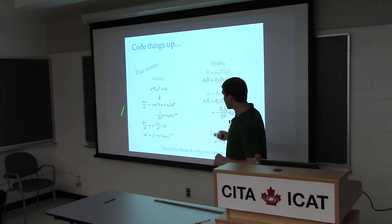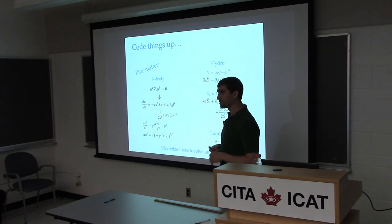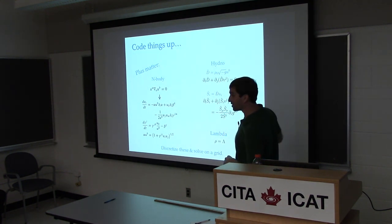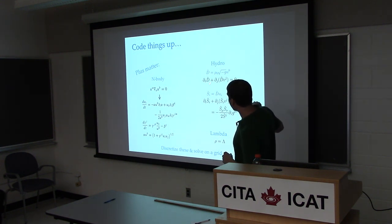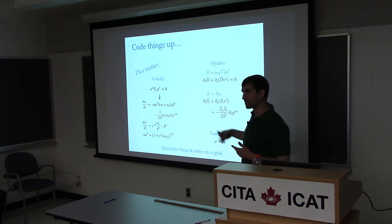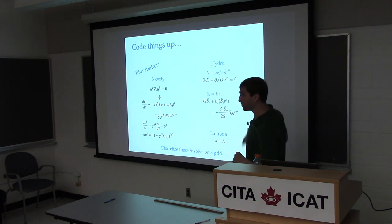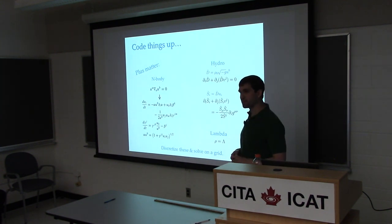I can evolve N-body matter using these equations — put down particles in my spacetime and see how the spacetime evolves in response to them. For a hydro formulation I have a density variable and a momentum variable: the density tracks rest density times metric and Lorentz factors, and the momentum variable is velocity times that density variable, written in a convenient form for numerical integration. The cosmological constant is just rho equals lambda — that one's very easy.